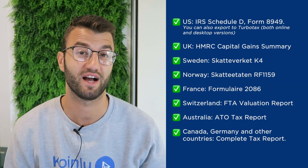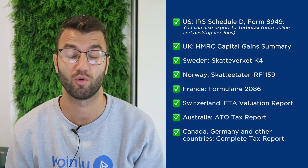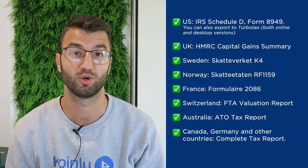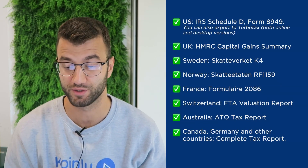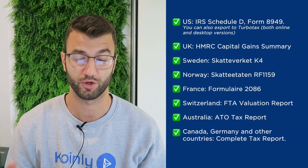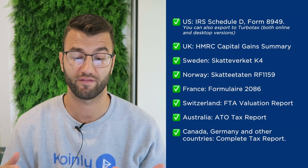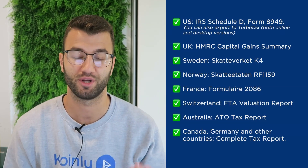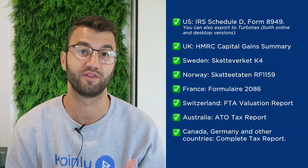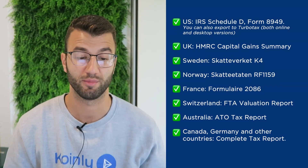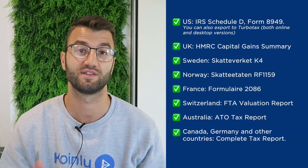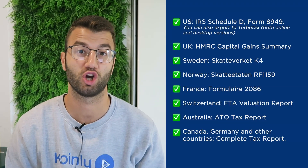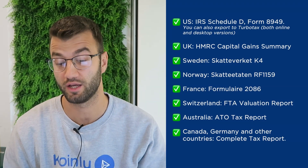For the US we have the IRS Schedule D Form 8949. You can also export to TurboTax, both online and desktop versions. We have reports for UK, Sweden, Norway, France, Switzerland, Australia, Canada, Germany, and other countries. We also have the complete tax report, which is a document you can print off and send directly to an accountant, combined with your other tax documentation.